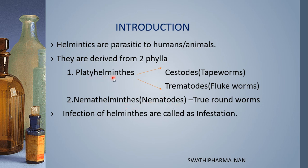Platyhelminthes are subclassified into two families. The first one is Cestodes and the second one is Trematodes. Cestodes are called as tapeworms, and Trematodes are called as flukeworms.